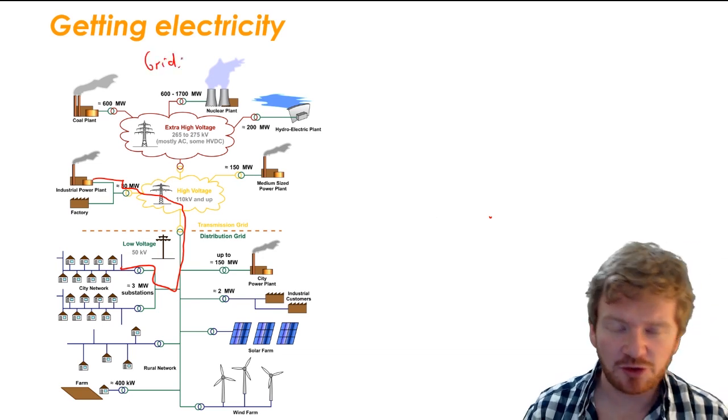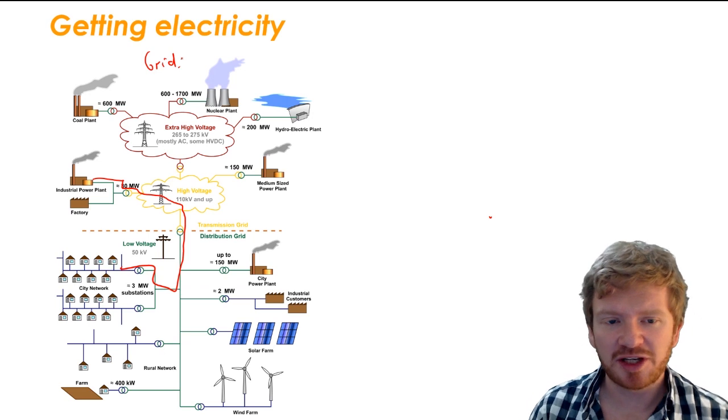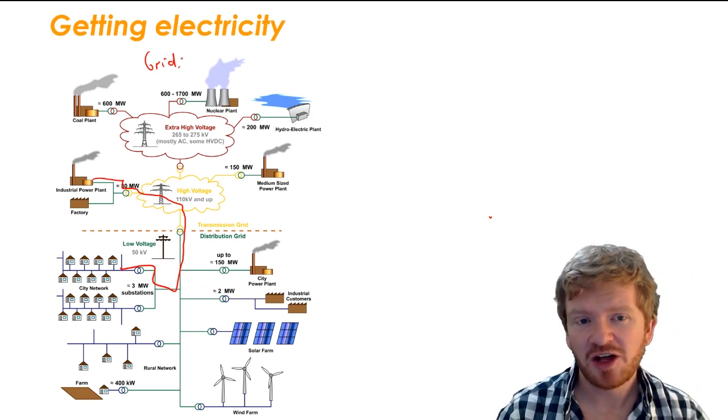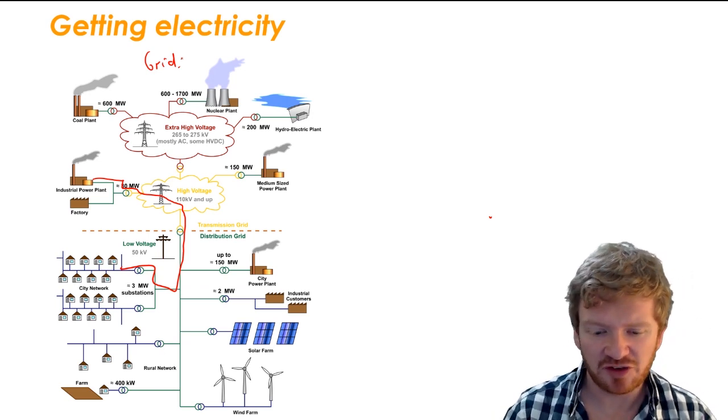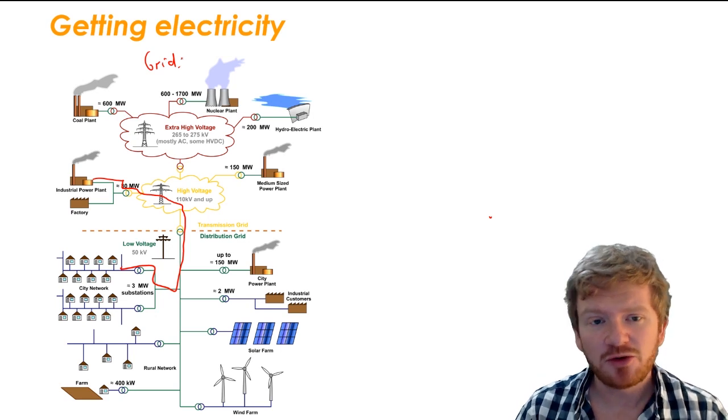The idea of the grid is that it's the connection of all the different cables, wires, and devices that transfer electricity from where it's made to where it's used.